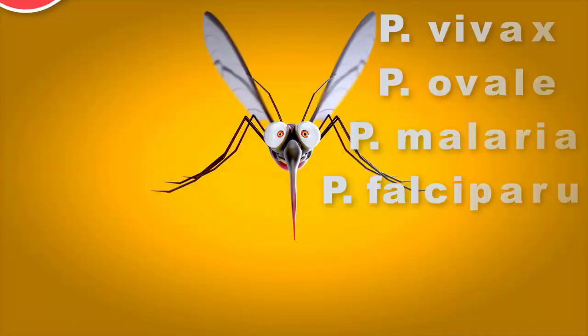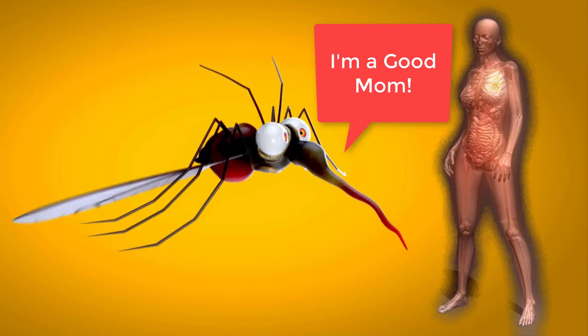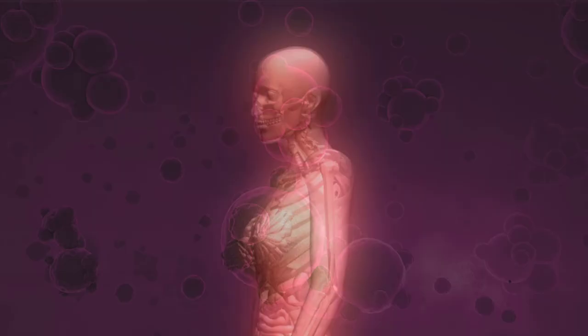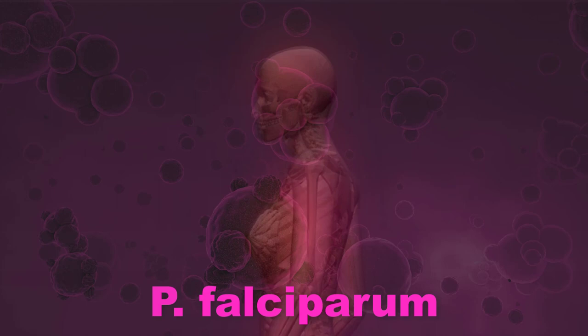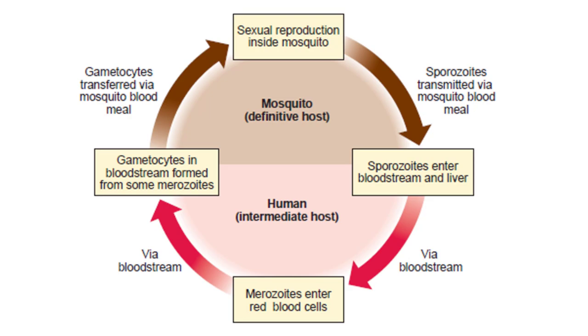All are transmitted by the female Anopheles mosquito, which consumes human blood to provide chemical components for her eggs. The most serious malaria infections can be life-threatening and are caused by P. falciparum. The propagation of Plasmodium parasites requires two hosts — mosquitoes and humans. The life cycle of the parasites has three important stages: the sporozoite, the merozoite, and the gametocyte.